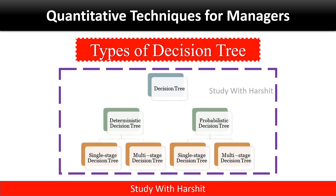Types of Decision Tree: Decision trees are basically divided into two parts — Deterministic decision tree and Probabilistic decision tree. The Deterministic decision tree has two sub-types: Single-stage decision tree and Multi-stage decision tree. Similarly, the Probabilistic decision tree also has two parts: Single-stage decision tree and Multi-stage decision tree.